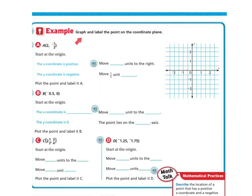Let's do another example — graph and label the point on the coordinate plane. We're going to graph point A at (2, negative one half). I'm going to move two units to the right, then half a unit down because it's negative. If a whole unit down is here, then half a unit is going to be in between. So point A is plotted right there.